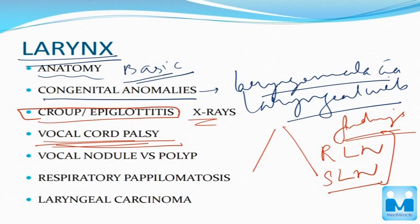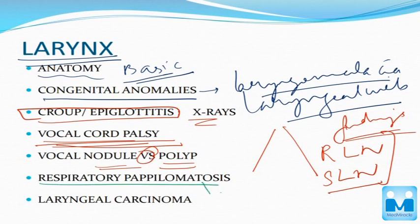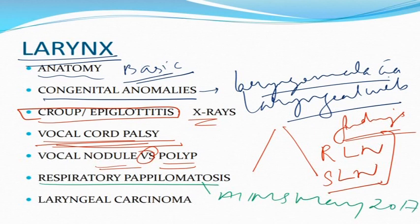The next topic is differentiation of vocal nodule versus polyp. Another important topic is respiratory papillomatosis — this was even asked in AIIMS May 2017 — so you have to read about the clinical features, investigation, and treatment.